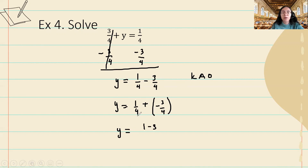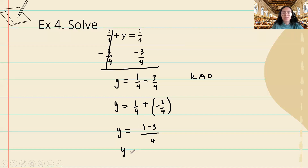Because these fractions have the same common denominator, I can simply perform the operation in the numerators and carry the denominator along. To add or subtract fractions, we need the same common denominator — we already have that. So our answer is negative two over four, or simply negative one-half.